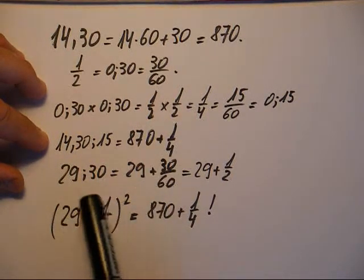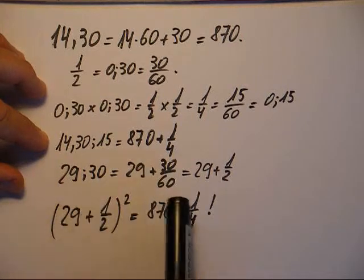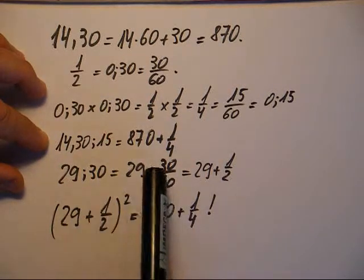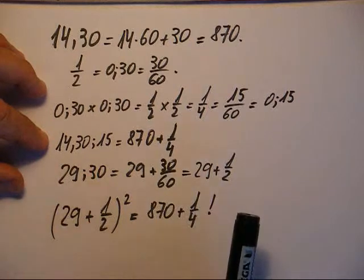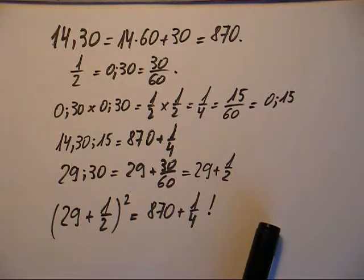Autrement dit, ça, c'est la racine carrée de ça. Voilà, le carré de ce nombre, c'est celui-ci. Voilà, on a les clés pour aller plus loin.